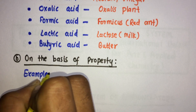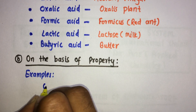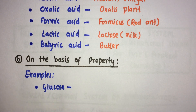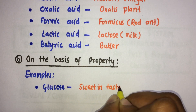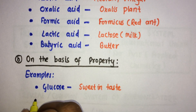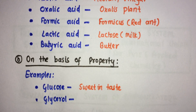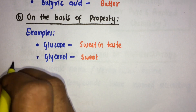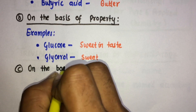On the basis of property, certain organic compounds are named due to their properties. For example, glucose is named due to its sweet taste, and glycerol is also named due to its sweet taste.